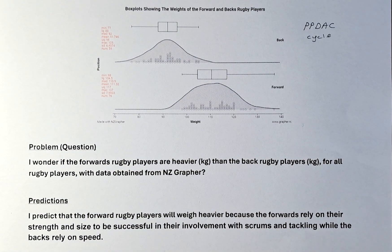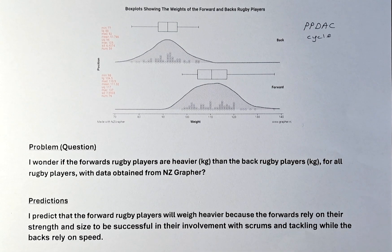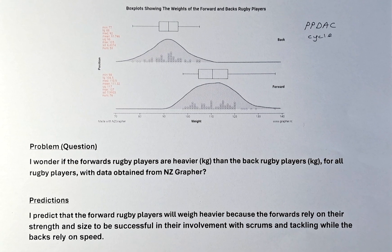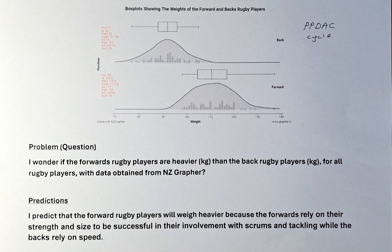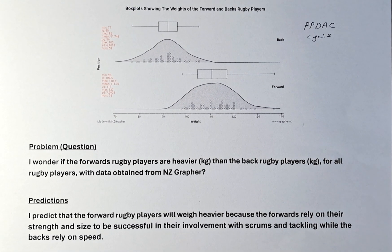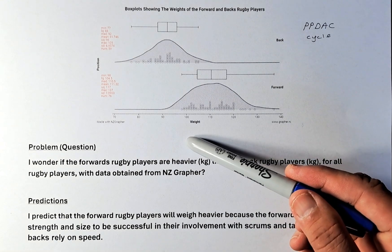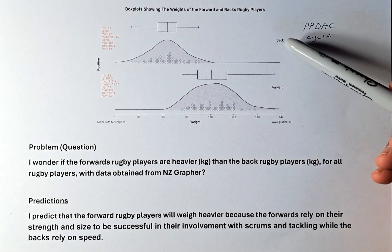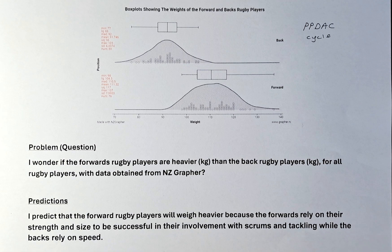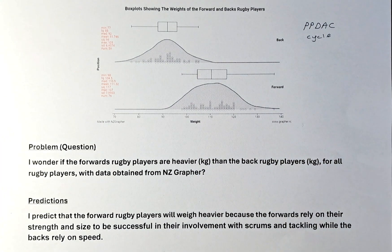To start this internal, we are given a data set and you are going to analyse it using New Zealand Graffer or any other tools that you find comfortable. We have done it using New Zealand Graffer. In this case, we have done the weight between the forward rugby players and the back rugby players, and the statistics are all found on the left-hand side of the data.